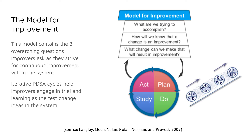These PDSA cycles allow members to describe and define the change idea, execute the change, collect and study the ongoing data to determine progress and efficacy, and then make the decision to adapt, adopt, or abandon the selected change. Once change ideas are adopted, plans begin to implement, spread, and scale the positive changes throughout the system.